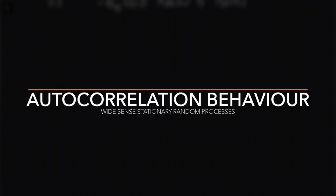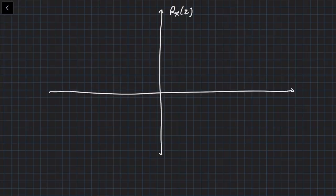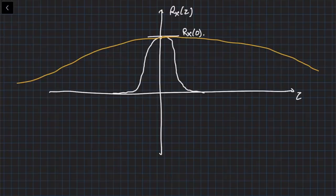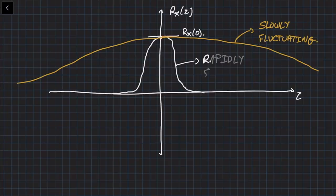Some intuition on the autocorrelation function: you can encounter one that starts at R_X(0), decays to 0, and is symmetric — an even function. Another could decay more quickly. The more rapidly the random process X(t) changes with time, the faster the autocorrelation function will decrease from its maximum value R_X(0). A slowly fluctuating process has a broad autocorrelation, while a rapidly fluctuating one has a narrow autocorrelation.